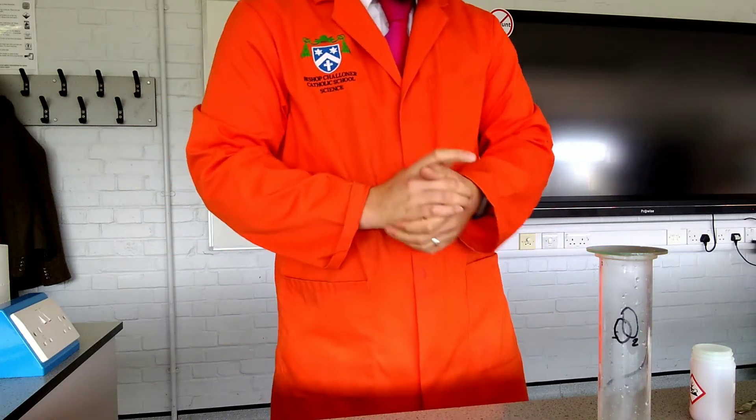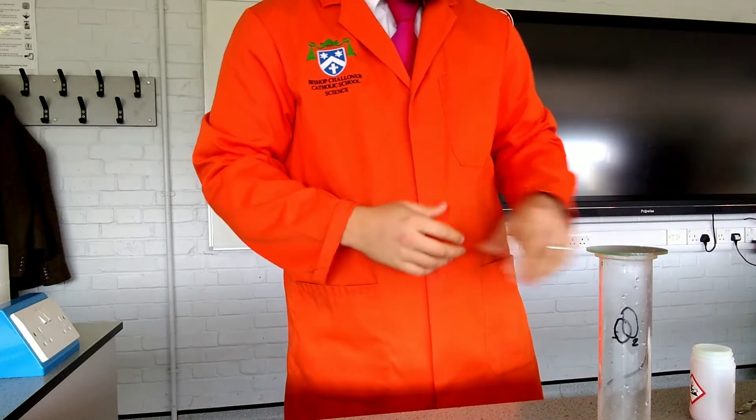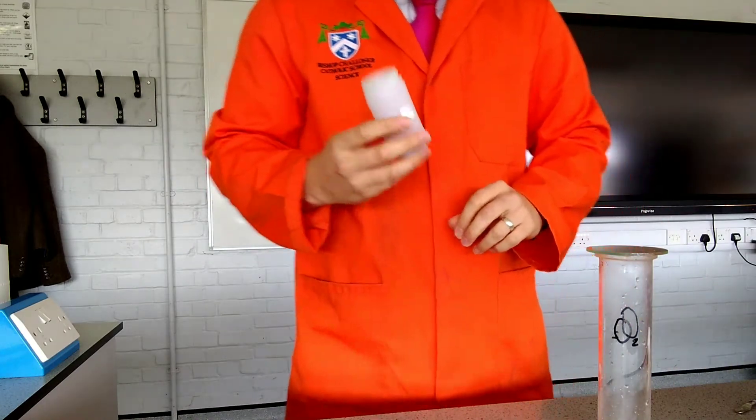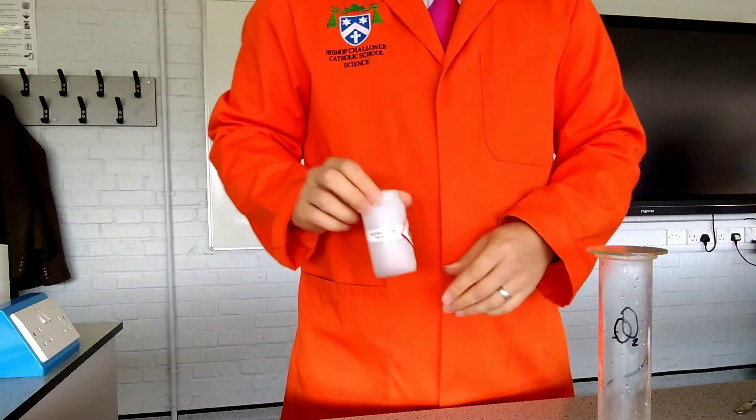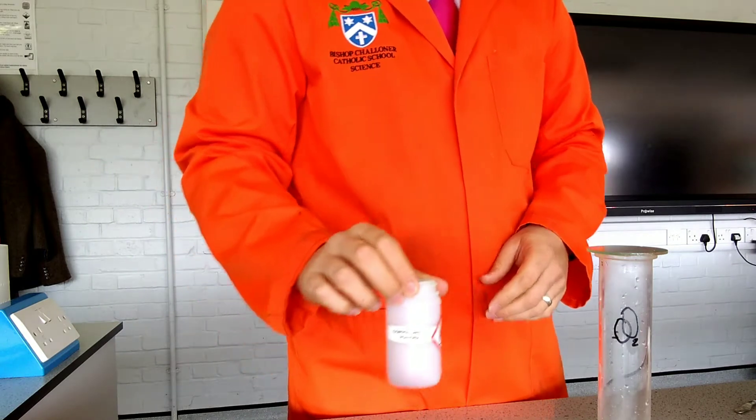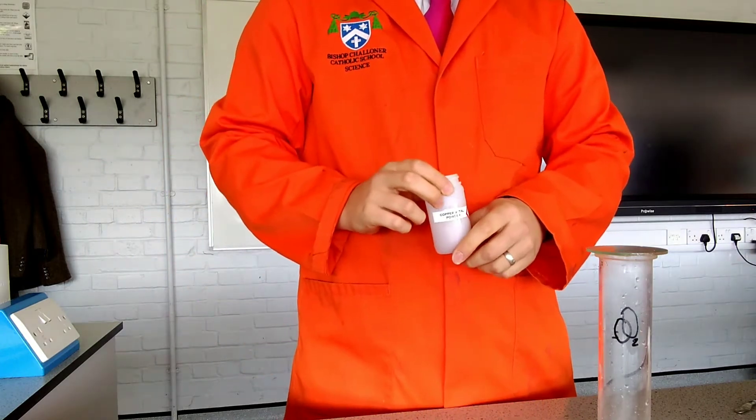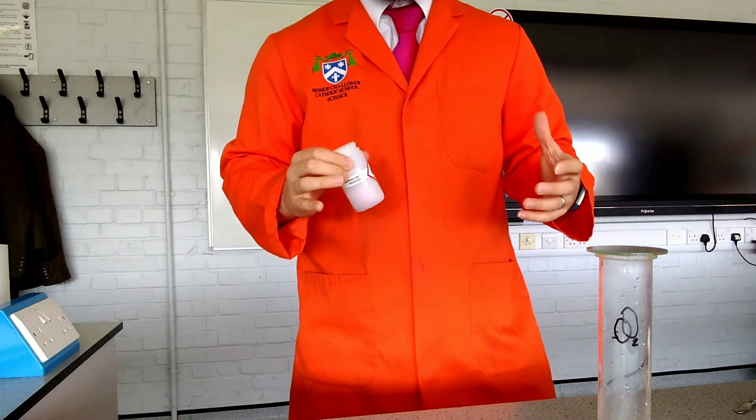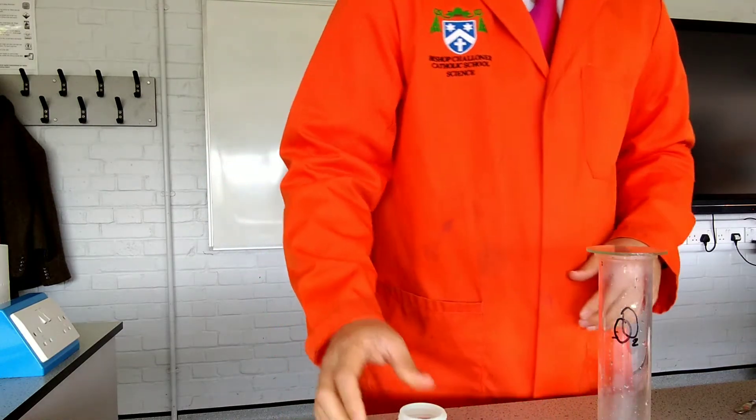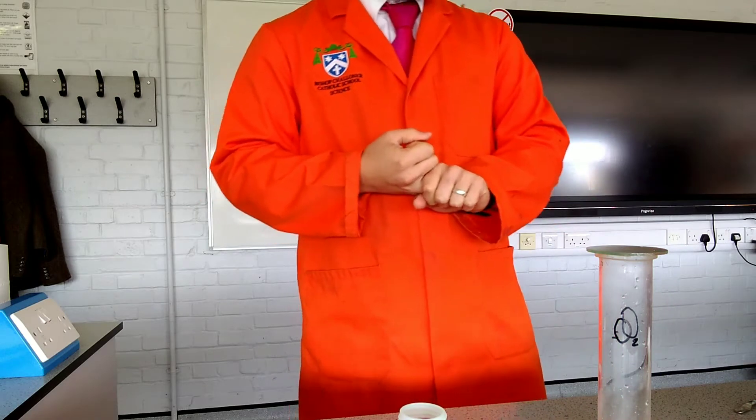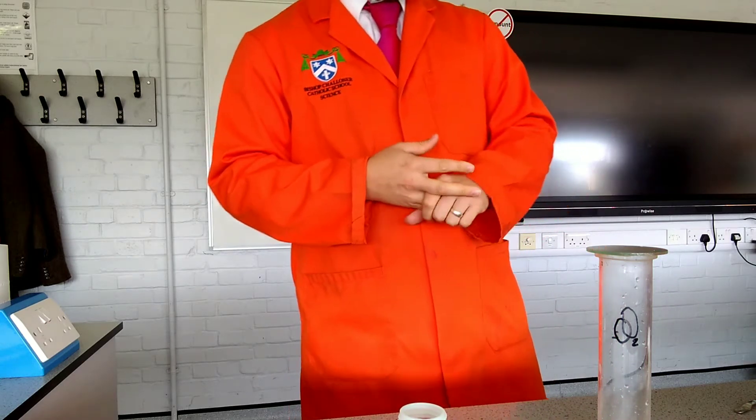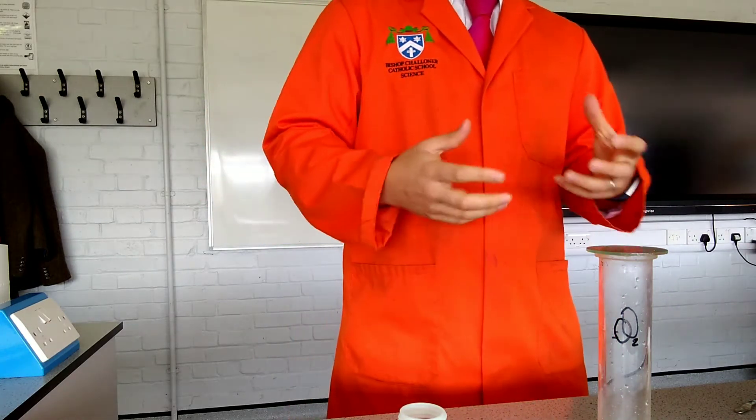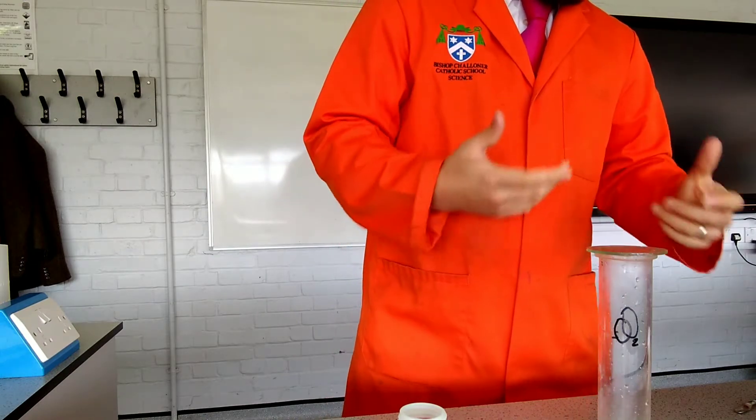In this video we're looking at metal oxides, or creating metal oxides, by burning metals in oxygen. We're going to hopefully come across two things. We're going to come across the differing reactivity of metals, and we're going to use the way these things react to show the difference. And the second thing we're going to do is see some of these things burning in oxygen and observe the reactions that take place and what we end up with.